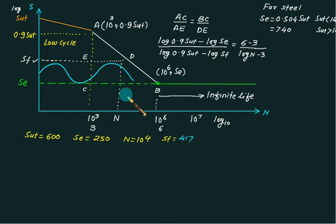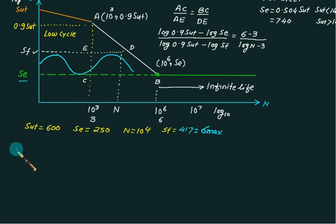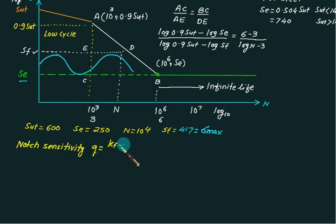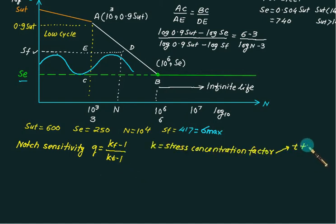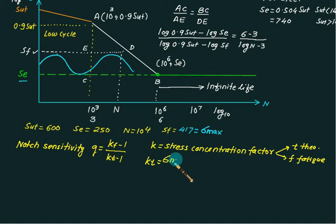We also have the concept of notch sensitivity, represented as Q = (Kf − 1) / (Kt − 1). Here, Kt is the theoretical stress concentration factor (suffix T = theoretical) and Kf is the fatigue stress concentration factor (suffix F = fatigue). The theoretical stress concentration factor is defined as the ratio sigma_max / sigma_nominal, calculated on the weakest section.